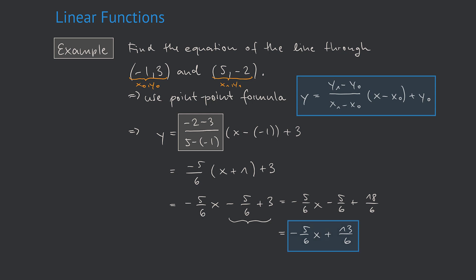So we find that the slope of the line is minus 5 over 6 and the y-intercept is 13 over 6.